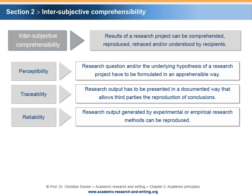An example: a student uses statistical software in order to simulate business scenarios for a master thesis project. Although the student uses the same data and the same settings, the generated probability distributions of the simulations are varying with each simulation run. The student is not able to reproduce the initial output. Here, a more or less substantial problem with the code of the statistical software can be suspected.